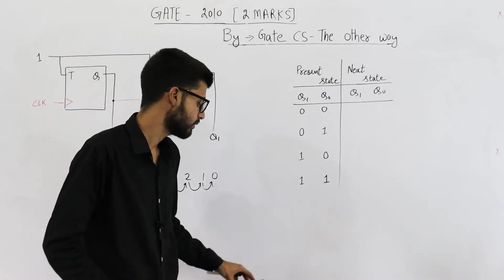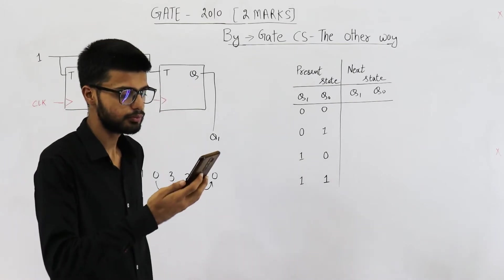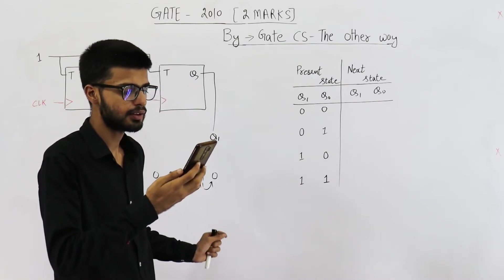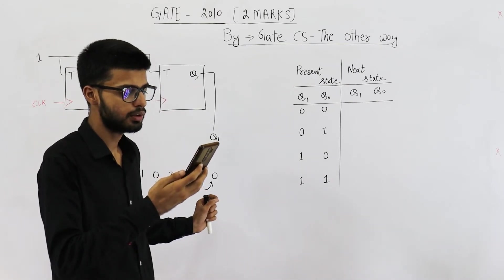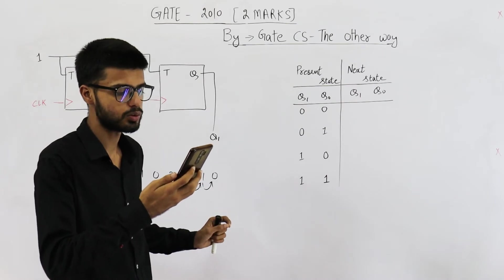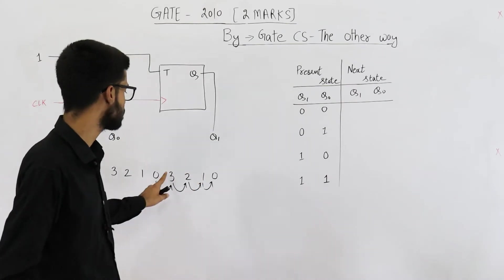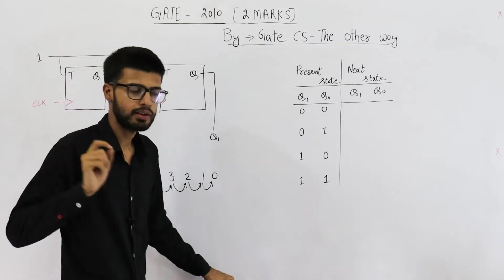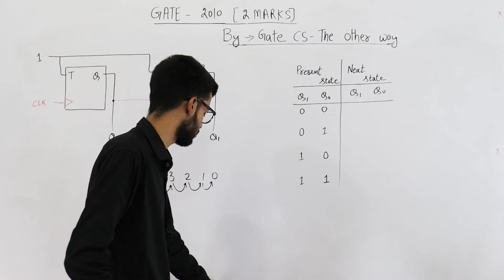Let me see which option is correct. Option A is: 1 1, 1 0, 0 1, and 0 0 — that means 3, 2, 1, 0. So option A is your answer.